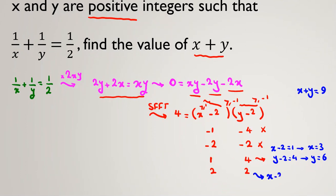Now in this case, x - 2 = 2 and y - 2 = 2 again. So x = 4 and y is also 4. So x + y = 8.